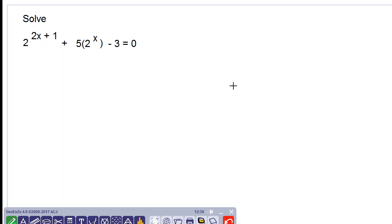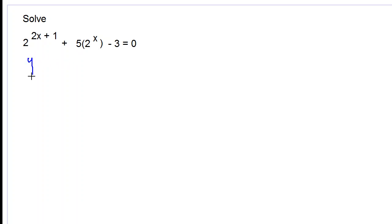Good day everyone, we are solving this equation: 2 to the power 2x plus 1 plus 5 times 2 to the x subtract 3 is equal to 0. What we want to do is make a substitution.